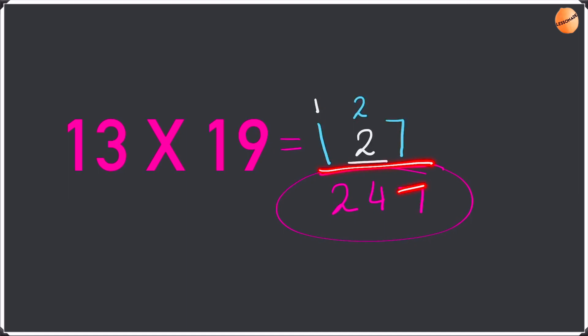We add these up: 7 plus nothing is 7, 2 plus 2 is 4, 1 plus 1 is 2. So the answer is 247.